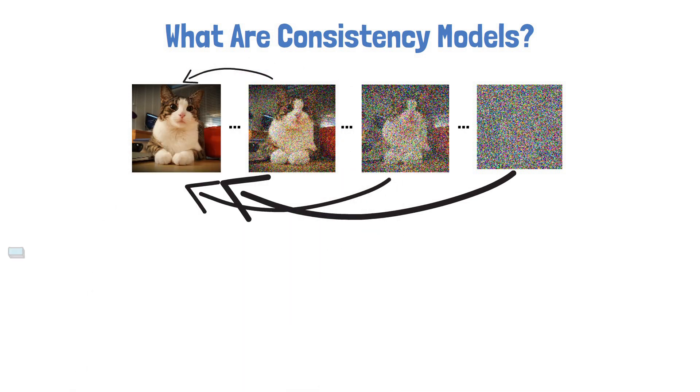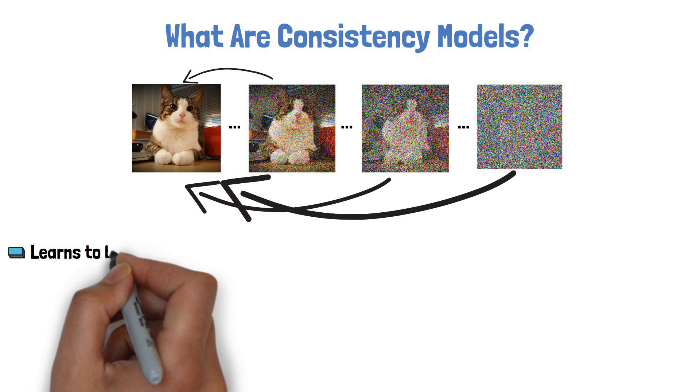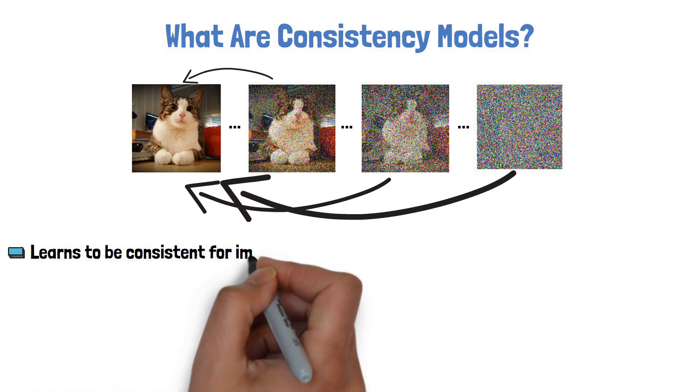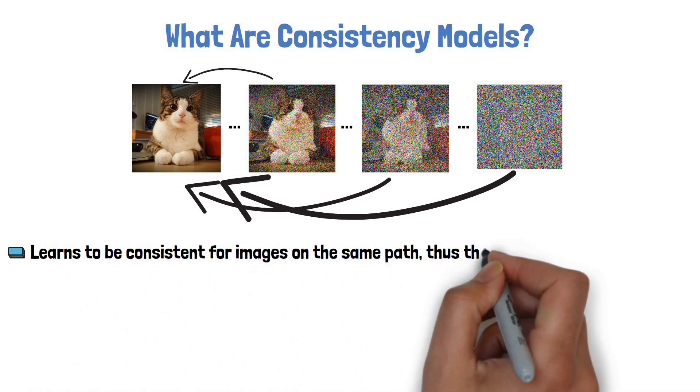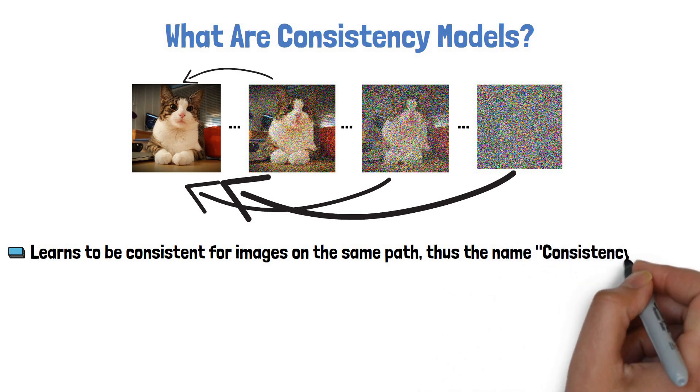So the name consistency models is because the model learns to be consistent for producing the same clear image for any point on the same path.